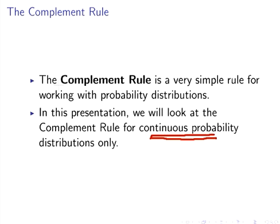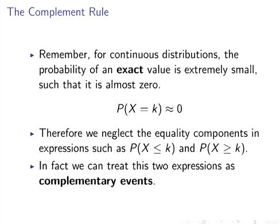An important matter to pick up on first is that for continuous distributions, the probability of an exact value is extremely small. For example, the probability that you're exactly 1.8 meters is extremely small. You might be a centimeter out or a millimeter out or one tenth of a millimeter out. So just remember that for continuous distributions, the probability of an exact value is extremely small such that we can treat it as zero.